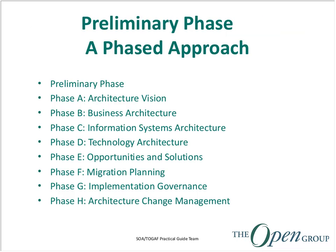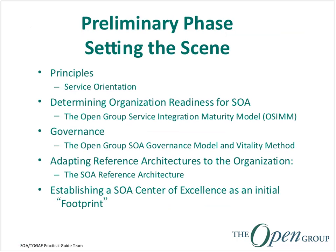In the preliminary phase, you're doing basically four or five major tasks. You're setting up the infrastructure to actually do enterprise architecture in terms of SOA — establishing principles. In the guide, we come up with an additional principle: the principle of service orientation, which is defined in the guide itself. The guide is freely available — you just have to register for it at the Open Group website.